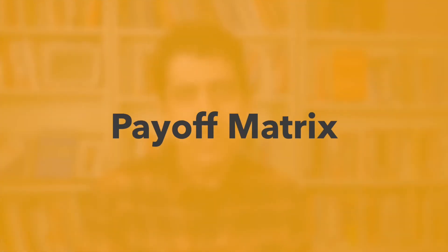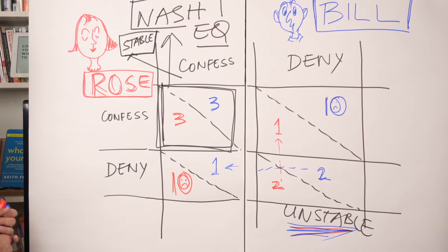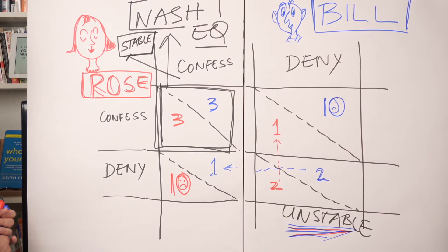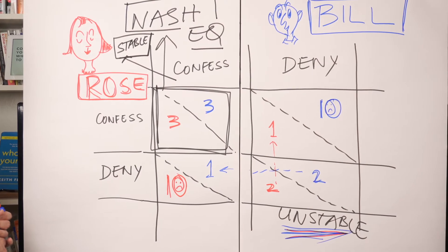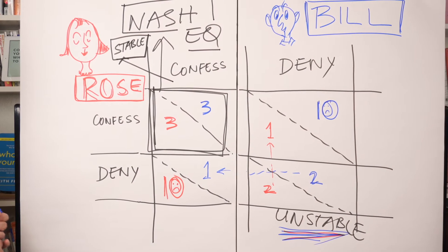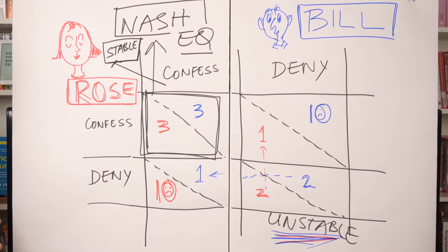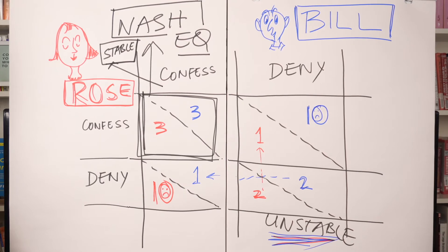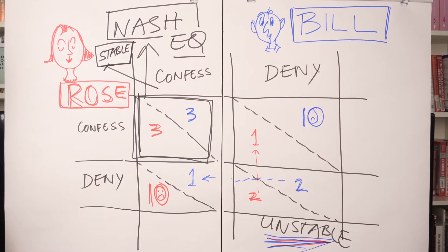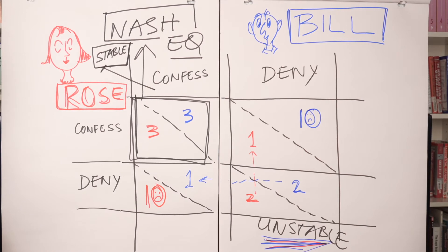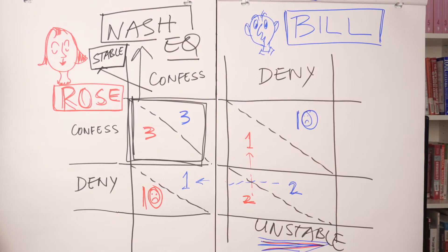Let's look at the payoff matrix for easy identification — Rose in red color and Bill in blue color. If you look at the payoff matrix closely, the most optimal solution for both of them is to keep silent by denying everything. Though they think rationally, they don't choose the most optimal solution. The fear of the other one confessing encourages Bill and Rose to betray or snitch on each other.